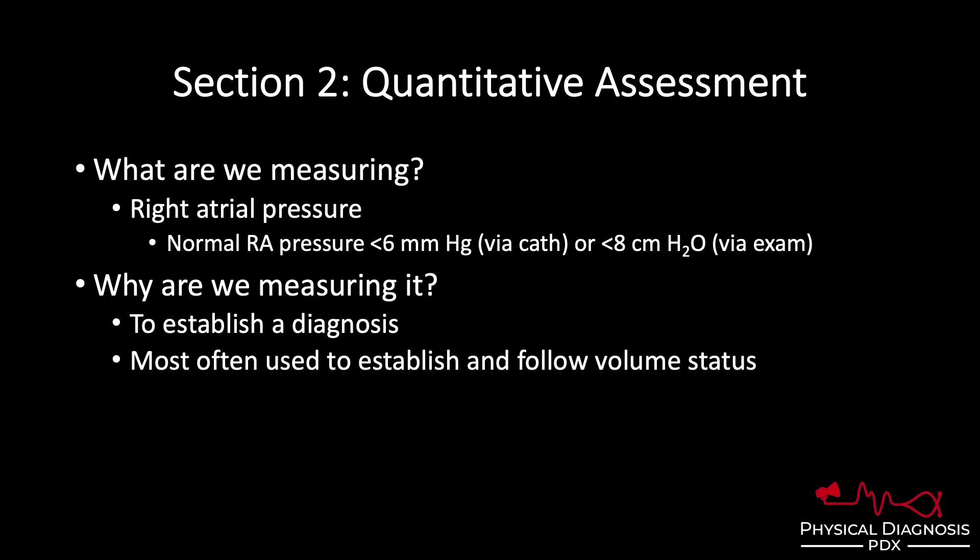And in order to properly interpret a JVP, we have to be familiar with normal. When measured via catheter in millimeters of mercury, normal pressure is less than 6. When measured via exam in centimeters of water, it's less than 8.